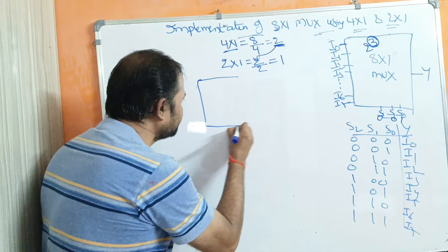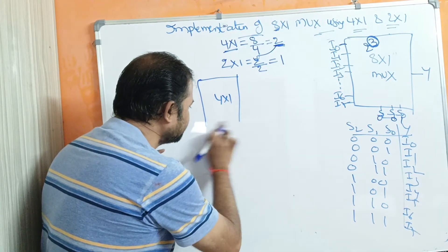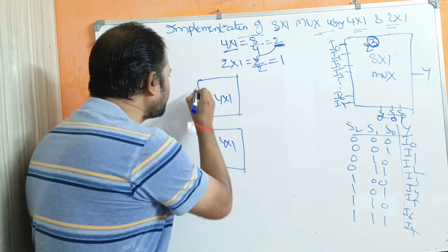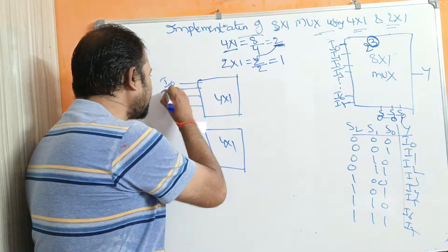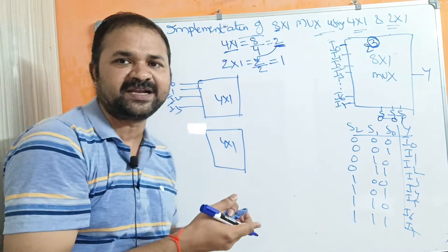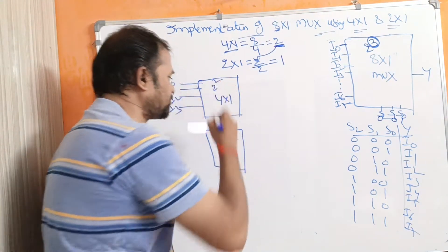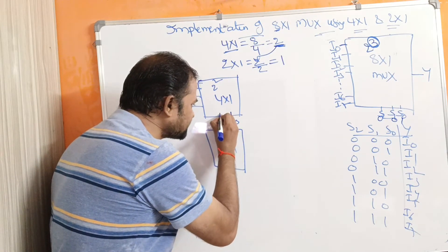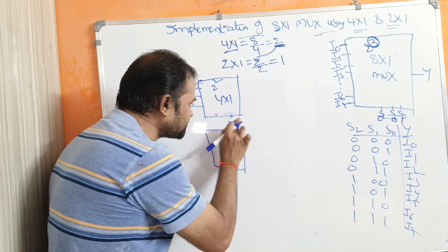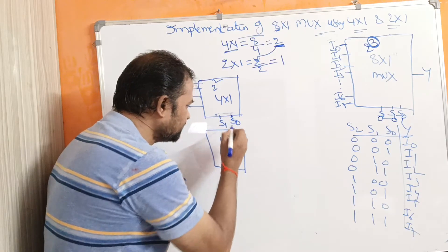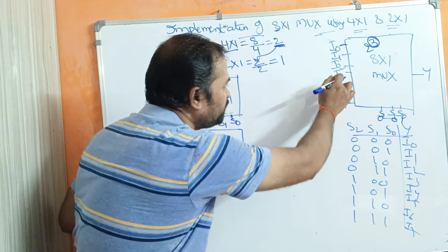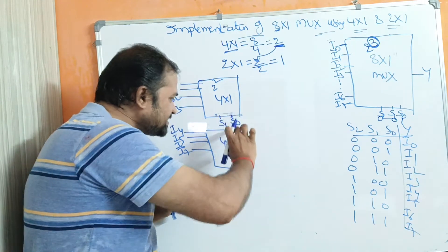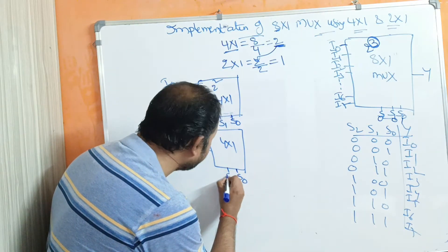Let us draw the diagram. At the first level, we require 2 four-by-1 multiplexers. The first multiplexer takes data inputs I0, I1, I2, I3, and the second multiplexer takes data inputs I4, I5, I6, I7. A 4 by 1 multiplexer has 2 selection inputs — since 4 equals 2 squared — so the selection inputs at the first level are S0 and S1 for both multiplexers. Each produces one output.